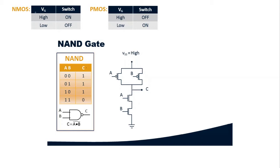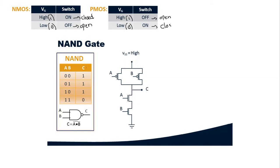For NMOS: when the gate voltage is high (logic one) the switch is going to be on — it conducts current. When the gate voltage is low, the switch is going to be off — no current flows. For PMOS: when the gate voltage is high the switch is off, and when the gate voltage is low (zero) the switch is on and current flows.